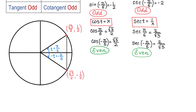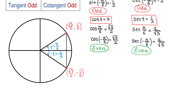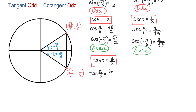Now let's talk about tangent and cotangent. By definition, tangent of t equals y over x. Then tangent of pi over 6 is equal to 1 half divided by square root of 3 over 2. After canceling 2 and 2, we get 1 over square root of 3.